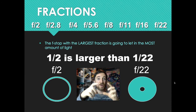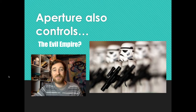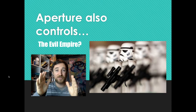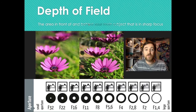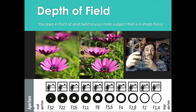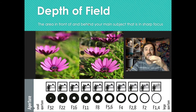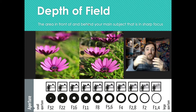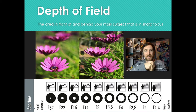What else does aperture control? Depth of field — the area in front of and behind your main subject that is in sharp focus. Notice how in the stormtrooper image, one is in focus but the rest are out of focus. Looking at the flower pictures, the one on the right has a large depth of field with all flowers in sharp focus, while the one on the left only has the front flower in focus. Depth of field is about how much of the picture is going to be in focus — aperture controls it.